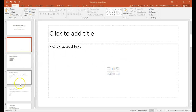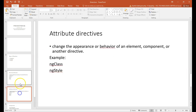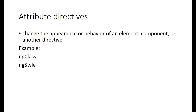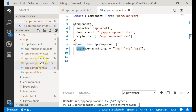We have almost completed structural directives. Let us move on to attribute directives. Attribute directives are used for changing the appearance or behavior of an element. They do not add or remove an element from the DOM — instead, they change the appearance or add behavior to an element that is already present. Examples are ngClass and ngStyle. Notice that the star is not present before these directives.